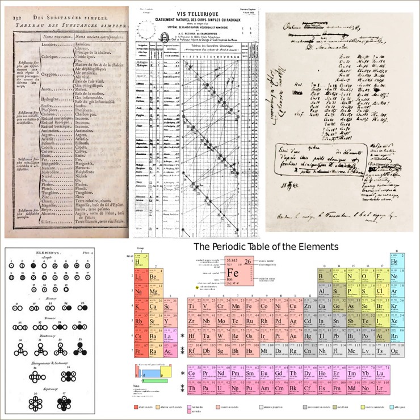In 1869, the table was published in an obscure Russian journal and then republished in a German journal, Zeitschrift für Chemie. In it, Mendeleev stated that the elements, if arranged according to their atomic mass, exhibit an apparent periodicity of properties. Elements which are similar as regards to their chemical properties have atomic weights which are either of nearly the same value or which increase regularly. The arrangement of the elements, or of groups of elements in the order of their atomic masses, corresponds to their so-called valences, as well as to their distinctive chemical properties, as is apparent among other series in that of Li, B, C, N, O, and F.